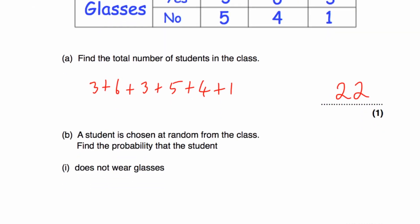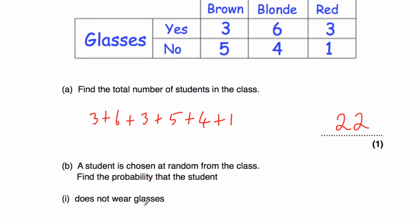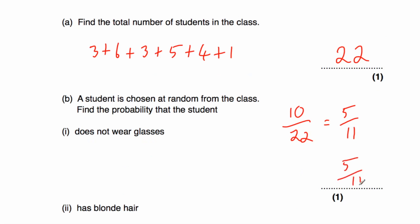The next part says: a student is picked at random from the class. What's the probability they do not wear glasses? Three plus six plus three equals 12 students wear glasses. Five plus four plus one equals 10 students do not wear glasses. There are 22 students in the class, so the probability of not wearing glasses is 10 out of 22, which cancels to five elevenths.